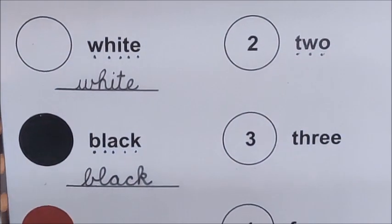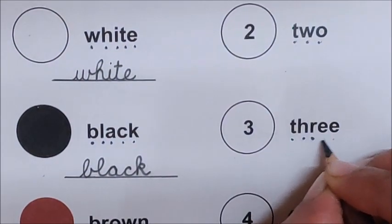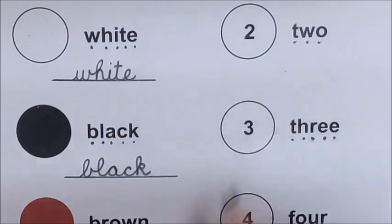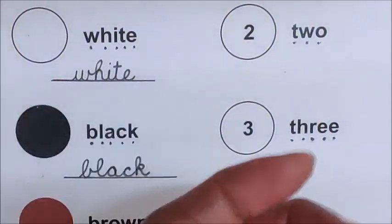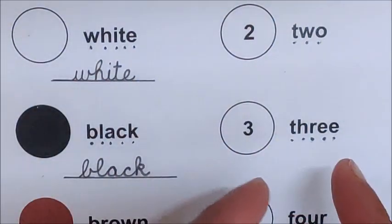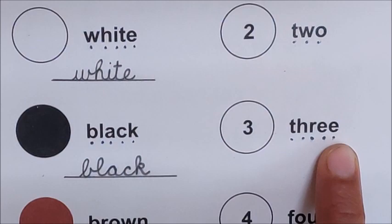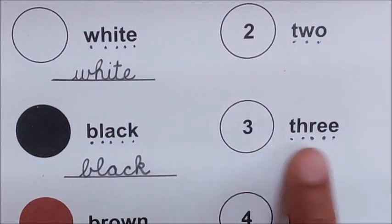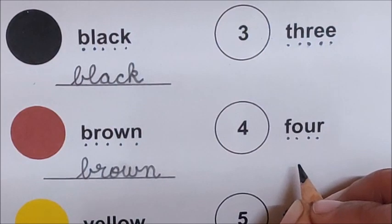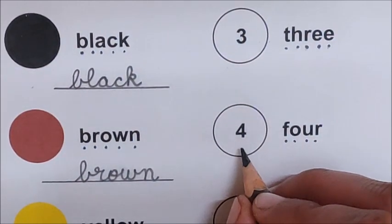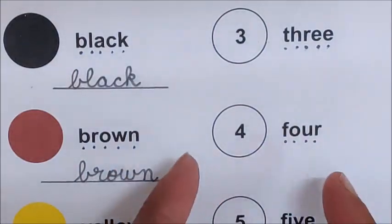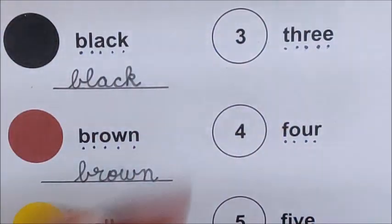Let us go to the next number name: T-H-R-E-E, 3. This is number three. Now clap and say T-H-R-E-E, 3. Children, we are not going to join the dots as we are reading them with letters. They are sight words. Go to the next number name: F-O-U-R, 4. This is number four in the circle. Clap and say F-O-U-R, 4.